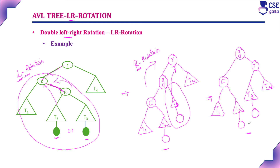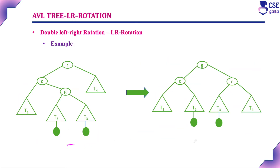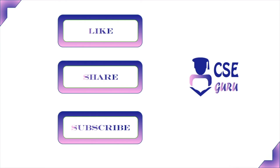Checking the balance factor after the double rotation, all nodes are balanced. The left side height equals the right side height — it is balanced. This is double left-right rotation: we took an unbalanced tree and converted it into a balanced AVL tree by performing an L rotation followed by an R rotation. This is all about double left-right rotation. Thank you for watching this video.